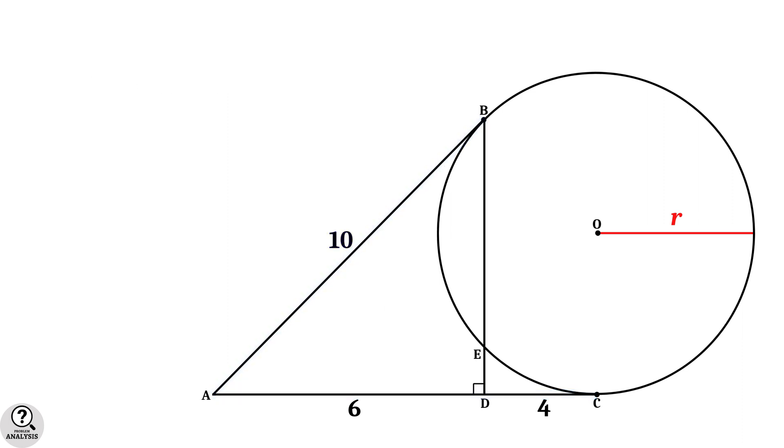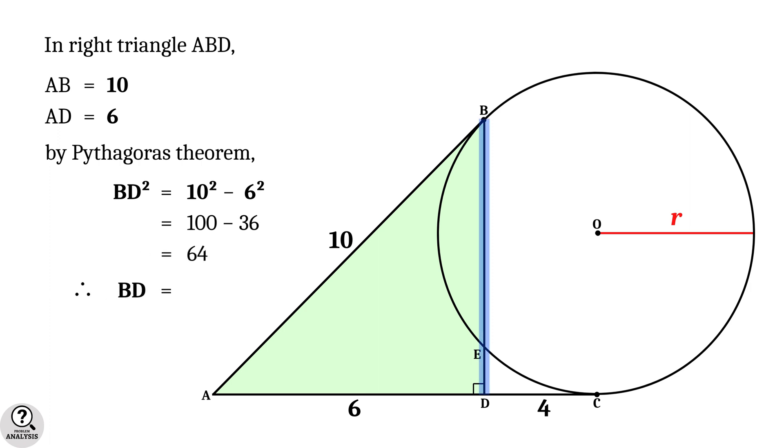Now in the figure, consider the right triangle ABD. We have AB equal to 10 and AD equal to 6. Then, by the Pythagoras theorem, we will get BD square equal to 10 square minus 6 square equal to 100 minus 36 equal to 64. And therefore, BD equal to 8 units.